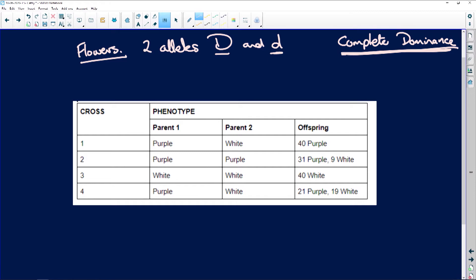Then they did four crosses. One, two, three, four. And in each of those crosses, they had 40 offspring that resulted. The phenotypes of the parents and the offspring in each cross are recorded. So here are the phenotypes of the parents.